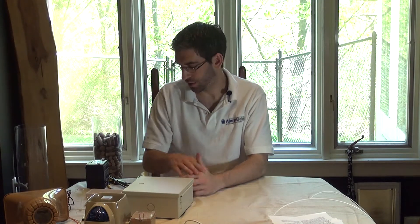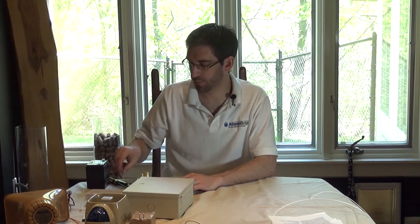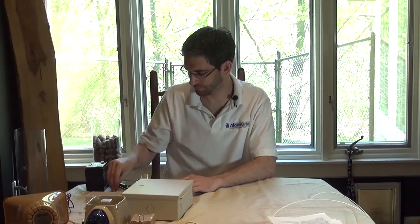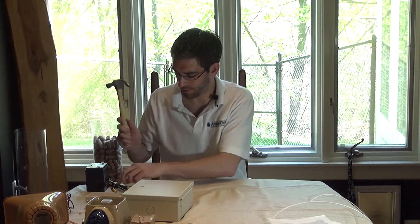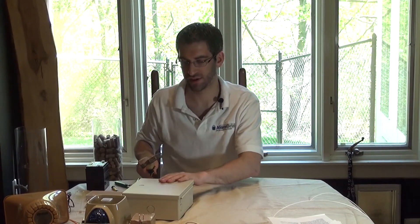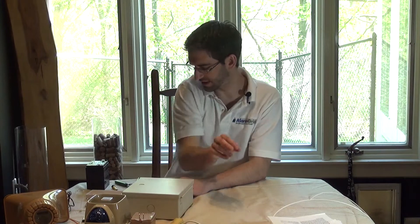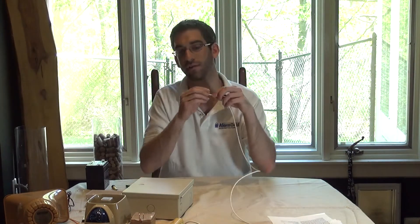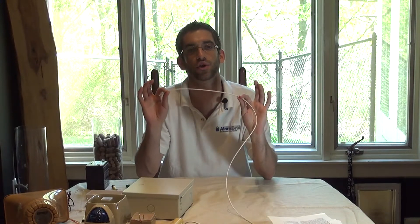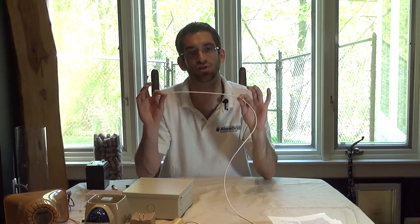So the tools you'll need, we have a little Phillips head screwdriver, we have a hammer and a bigger screwdriver, and that's just for some knockouts on the panel. You don't really need these, but it makes it a little bit easier. We have some wire strippers, and we have four conductor, 22-gauge, stranded wire.